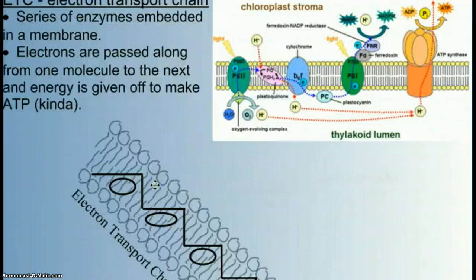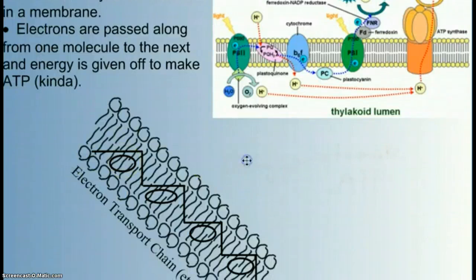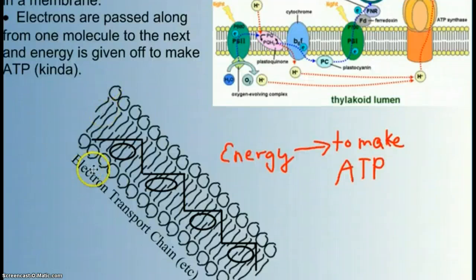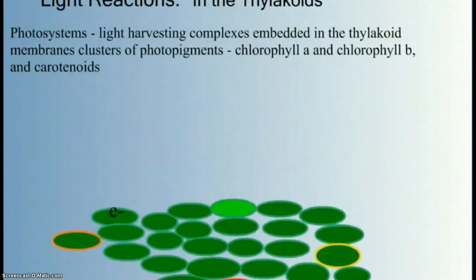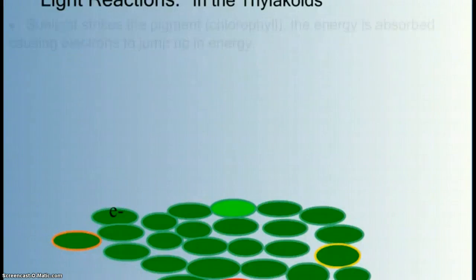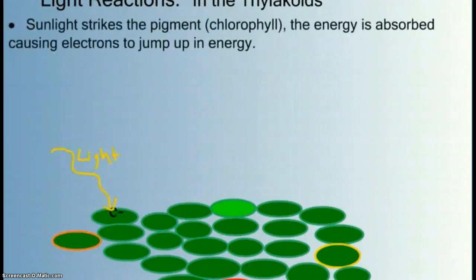When electrons get passed down electron transport chains, energy is given off to make ATP. Recall that our photosystems are clusters of photopigments embedded in the membrane that are really good at absorbing light energy. And when they do, electrons are boosted to a higher energy level.